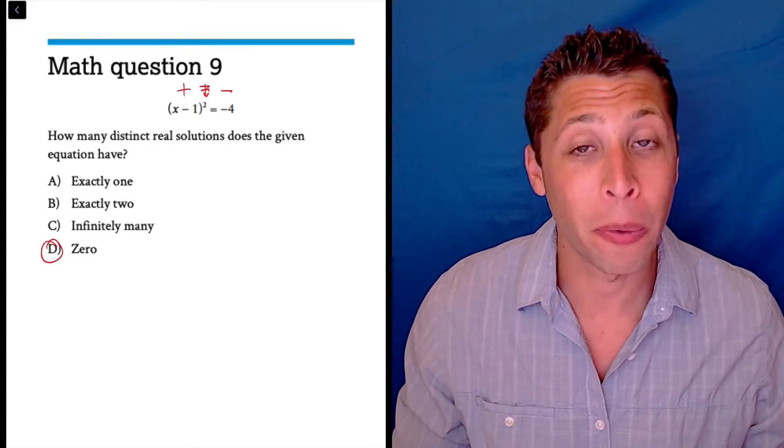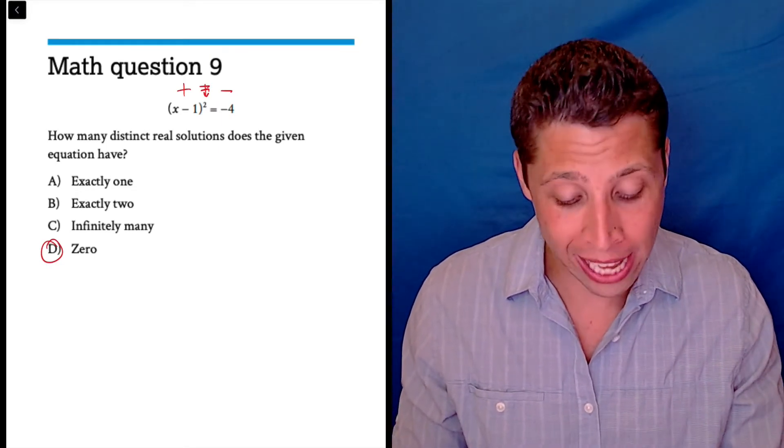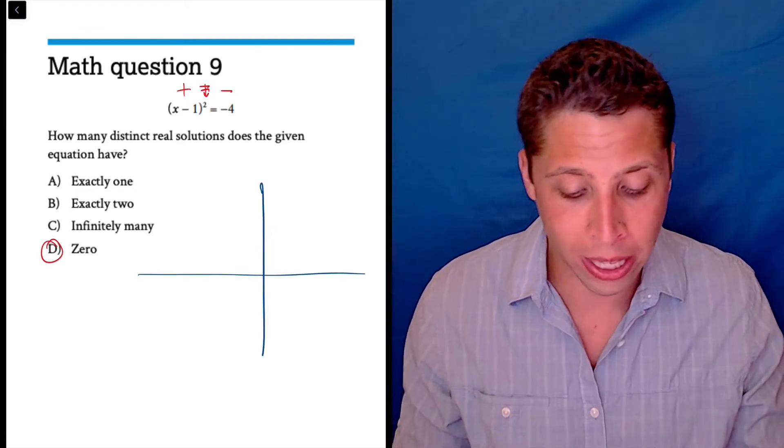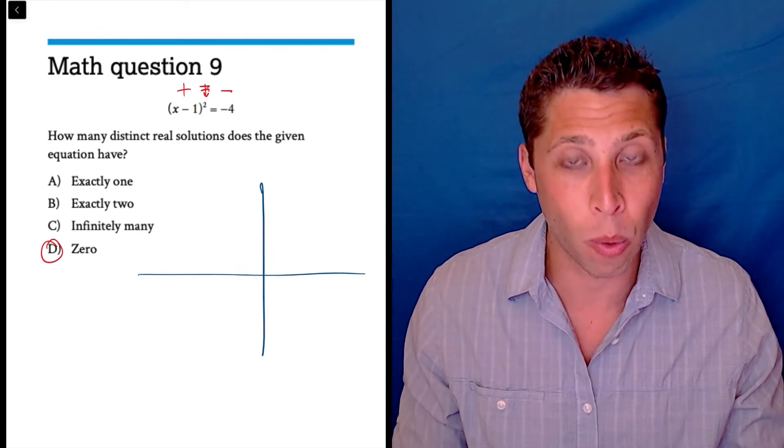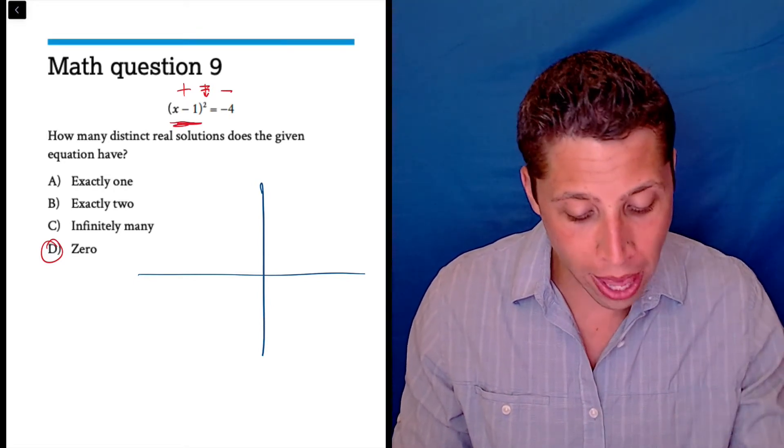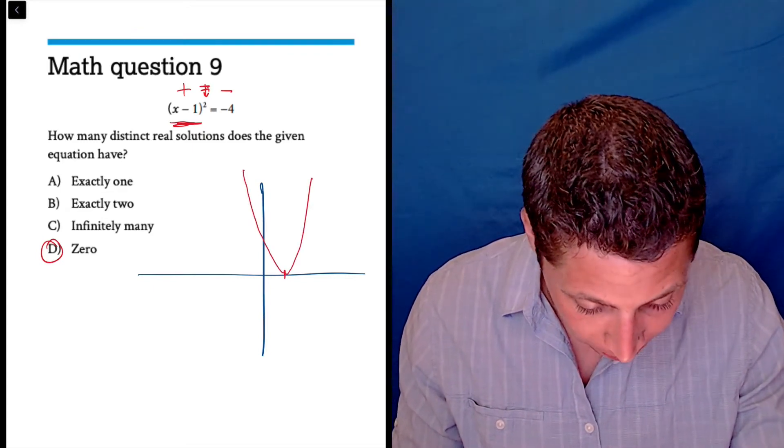But on the new test, when we have a calculator, a graphing calculator, I think everyone can get this. Because all we have to do is graph this thing. And obviously you would graph it on the actual calculator, but I'll just show you this is going to be a quadratic. If we graph this left side, it's going to be a quadratic with a single solution at one.